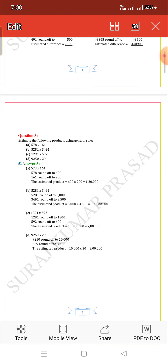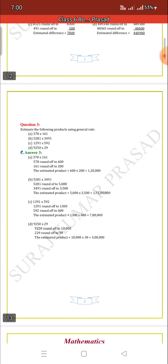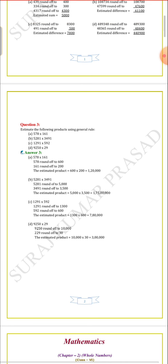Question C: 1,291 into 5,992. 1,291 rounds off to 1,300, and 5,992 rounds off to 6,000. The estimated product equals 1,300 × 6,000 = 78,00,000.